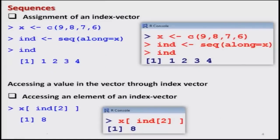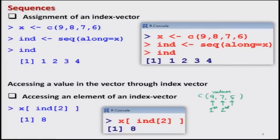In the next section, I would like to introduce how to assign a sequence with an index vector. First, let us understand what an index in a vector is. Suppose I take a vector containing values 9, 7, 5. The value at the first position is 9, at the second position is 7, and at the third position is 5. So these are the indices 1, 2, 3 — nothing but the index.